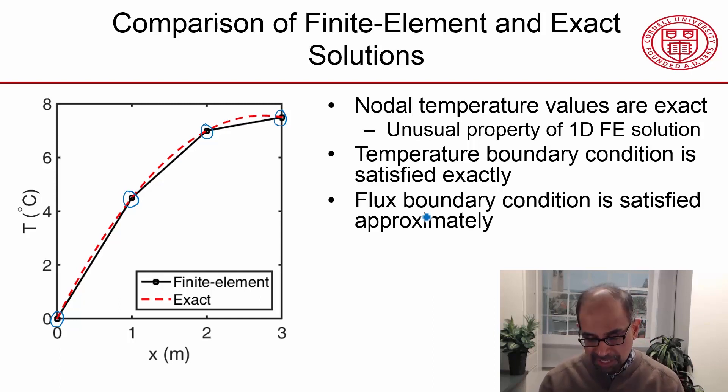In contrast, the flux boundary condition is satisfied approximately. To see that, we look at the slope because the flux is proportional to the slope of the temperature curve. In the exact solution, the slope is something like that, and in the finite element solution, the slope is like that, and so you see there's a mismatch between the two.